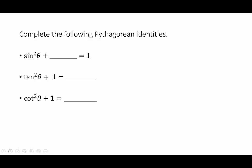First, the Pythagorean identities. The main one is sine squared theta plus cosine squared theta is equal to 1. From that main Pythagorean identity we have two residual ones: tangent squared theta plus 1 is equal to secant squared theta, and cotangent squared theta plus 1 is equal to cosecant squared theta.